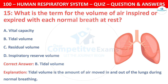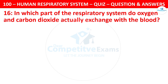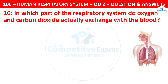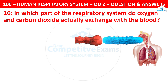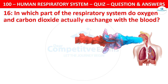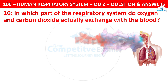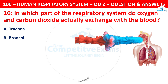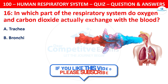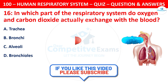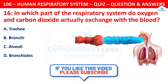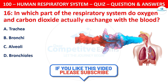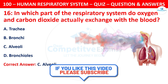Question 16. In which part of the respiratory system do oxygen and carbon dioxide actually exchange with the blood? Your options are: trachea, bronchi, alveoli, or bronchioles. The correct answer is C, alveoli.